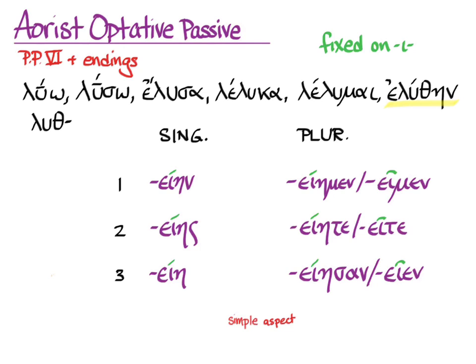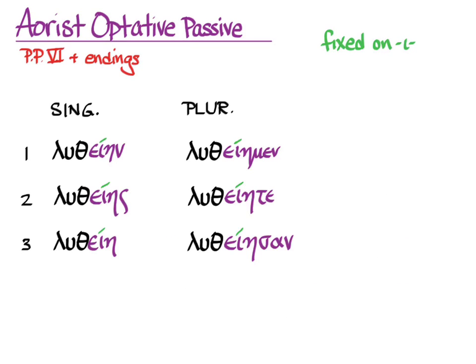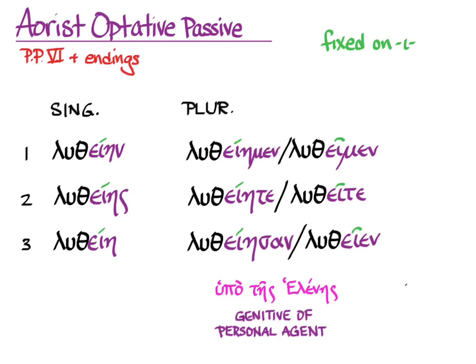Let's put that all together with luo: luteaem, luteaes, luteae, luteaemen, luteaeta, luteaeson. And the alternate forms: luteamen, luteaeta, and luteaen. You'll use the genitive of personal agent if you need it.